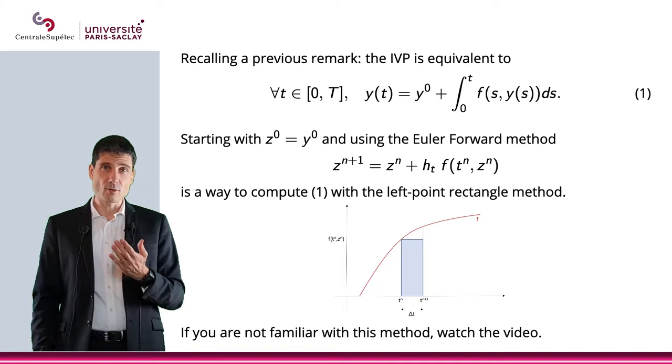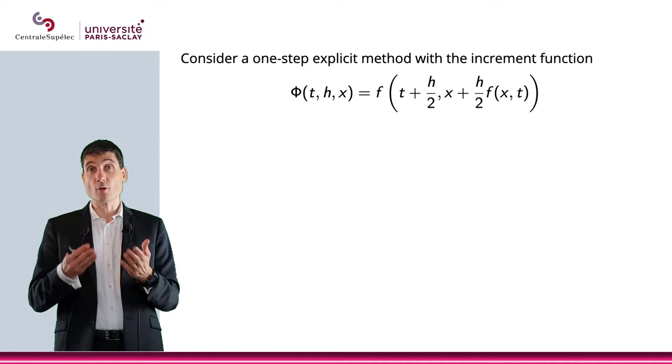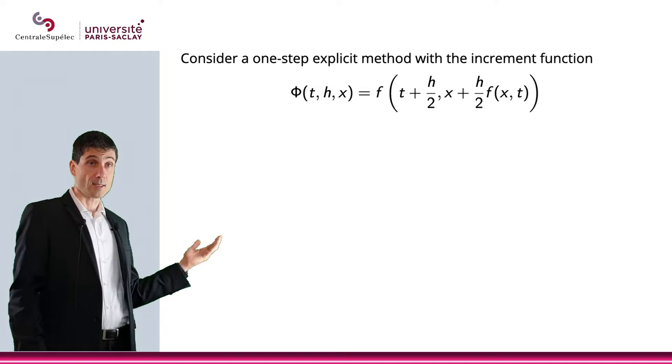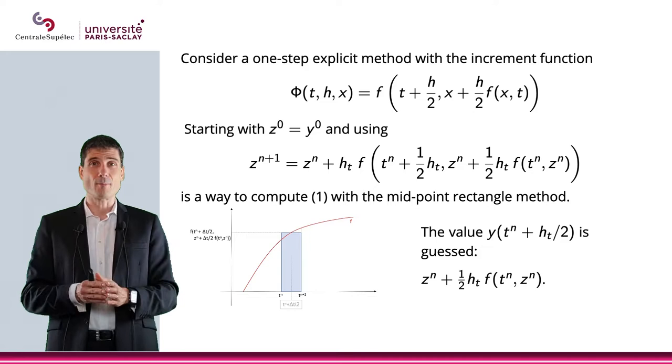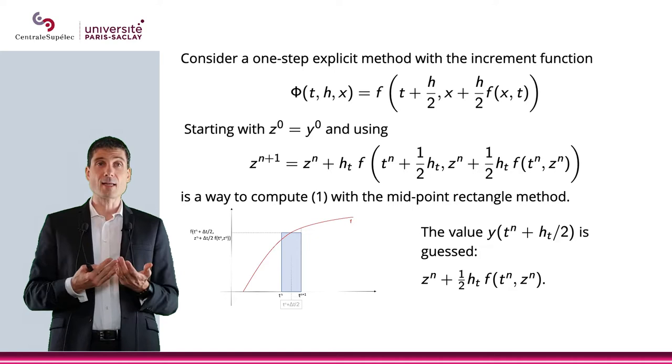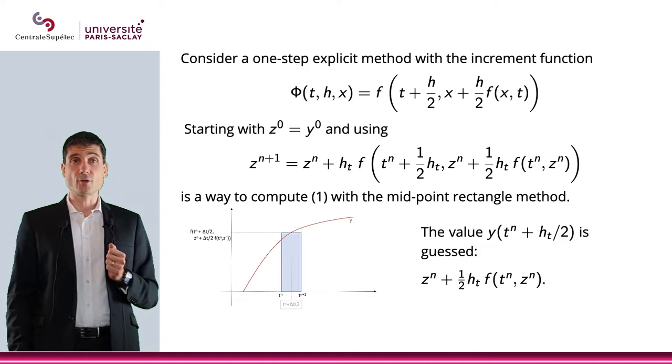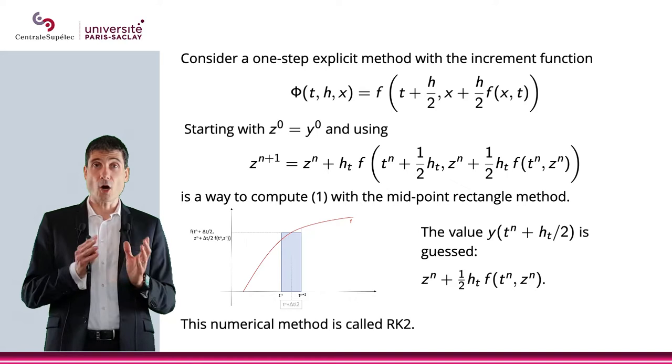What would happen if instead of choosing the increment of the Euler-Forward method, I was to choose Φ(t, h, x) = f(t + h/2, x + (h/2)f(x,t))? That would mean that the numerical method would be zⁿ⁺¹ = zⁿ + hₜf(tⁿ + hₜ/2, zⁿ + (hₜ/2)f(tⁿ, zⁿ)). Then it means I'm computing the integral with the midpoint rectangle method. This numerical method will be called RK2 for Runge-Kutta 2.